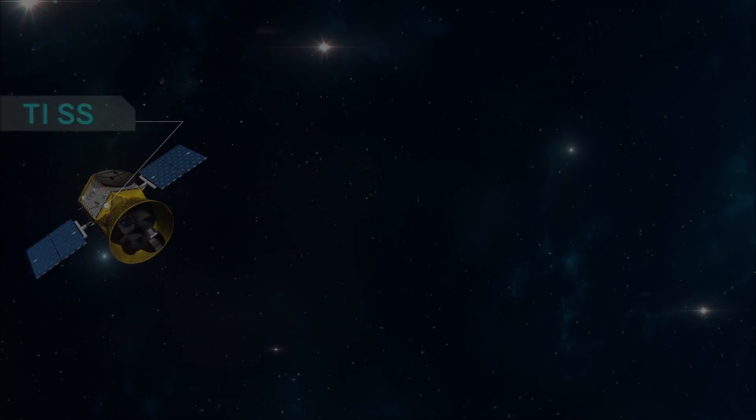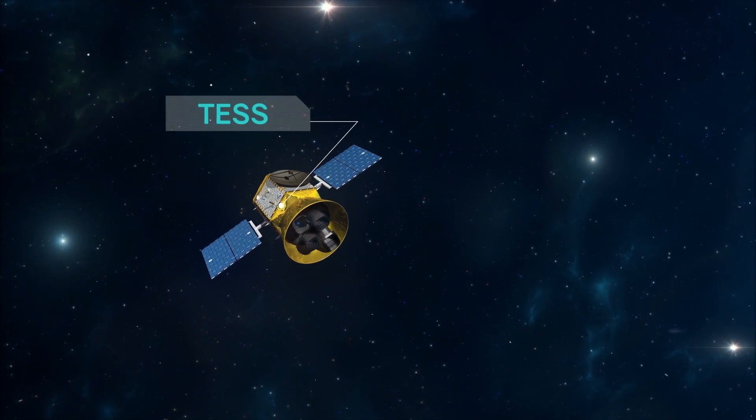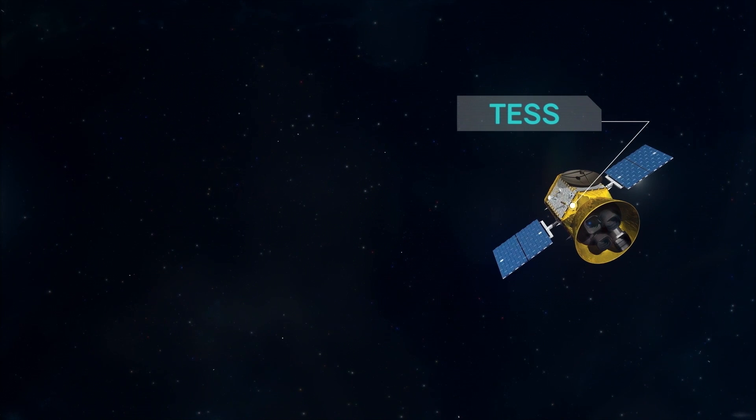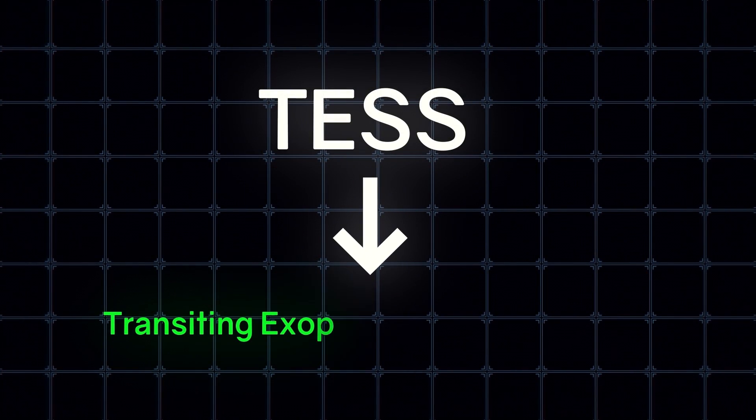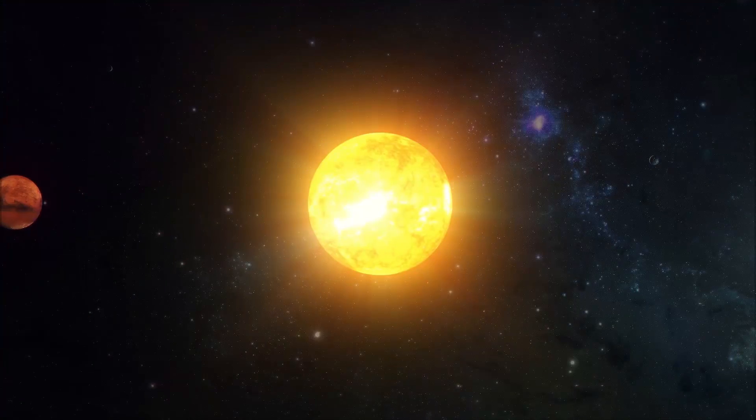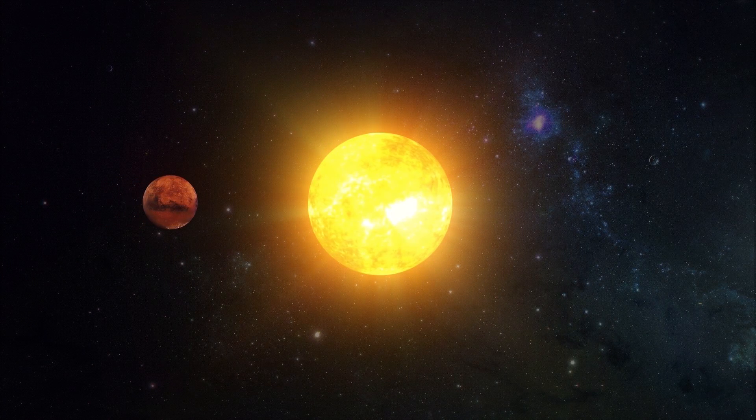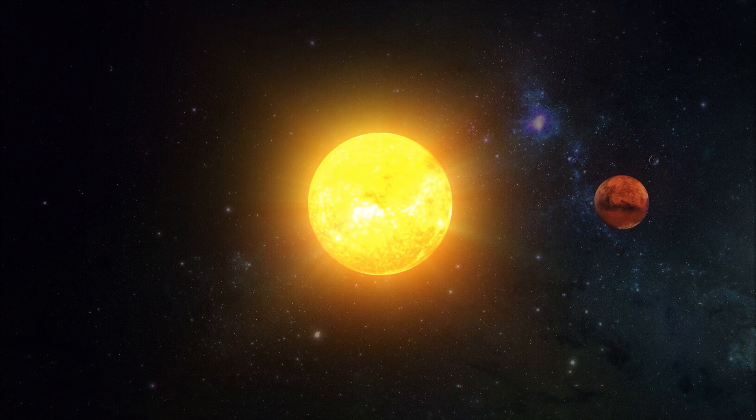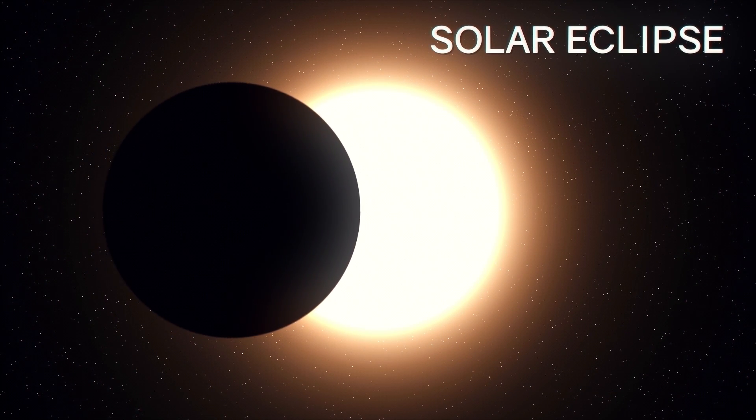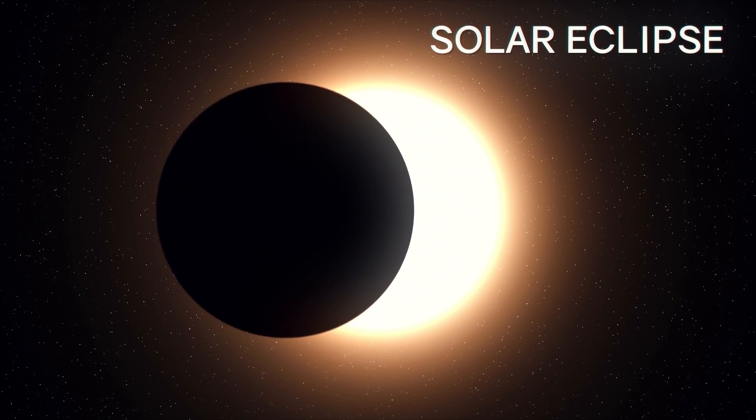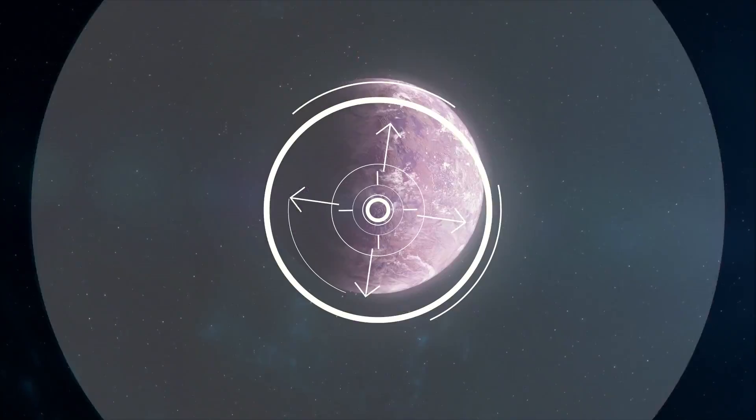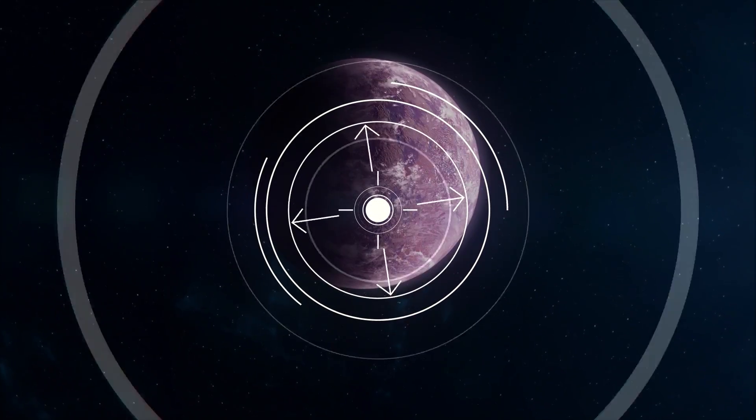To search for extraterrestrial planets, the TESS telescope used the transit method which has proven itself in the Kepler project. TESS stands for Transiting Exoplanet Survey Satellite. The transit method uses the particularity that if the planet passes between the star around which it rotates and an outside observer, then for this observer the luminosity of this star decreases for some time. This effect was observed by many people - a solar eclipse, when the Moon passes between our star and the Earth. But in the case of searching for exoplanets, the task becomes thousands of times more difficult.